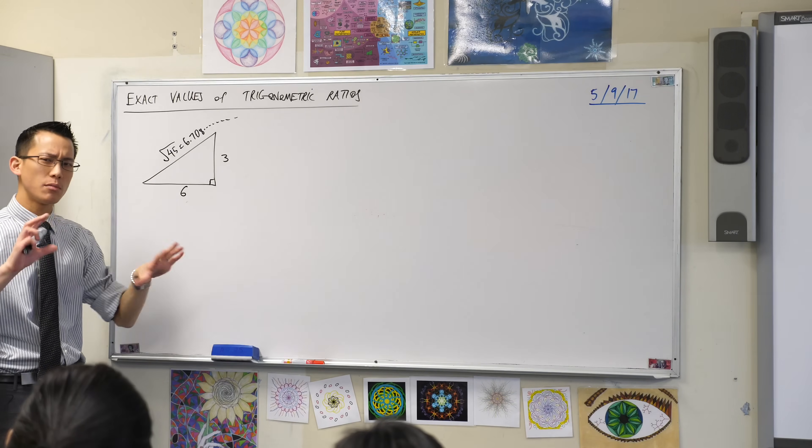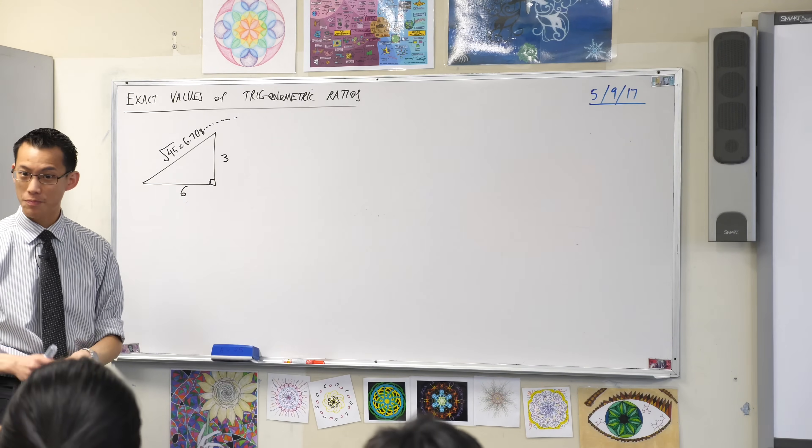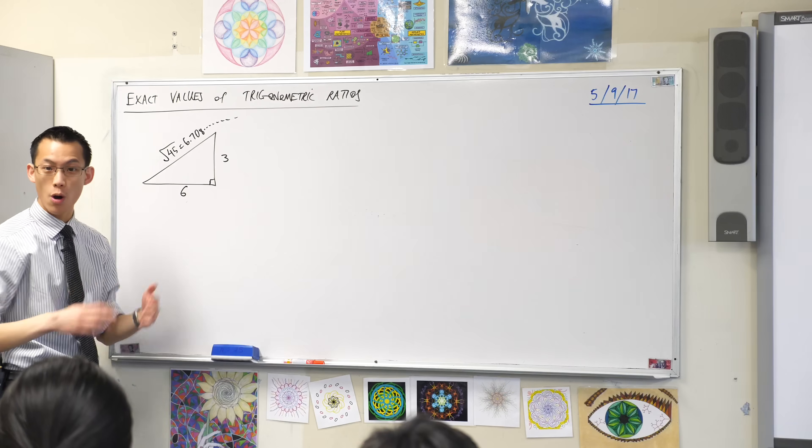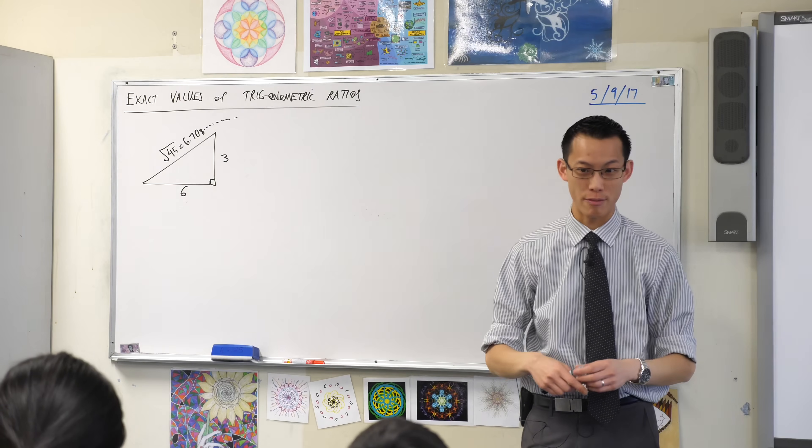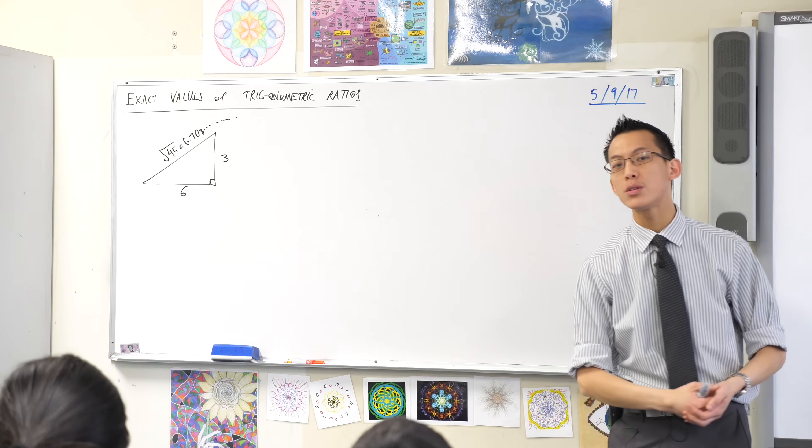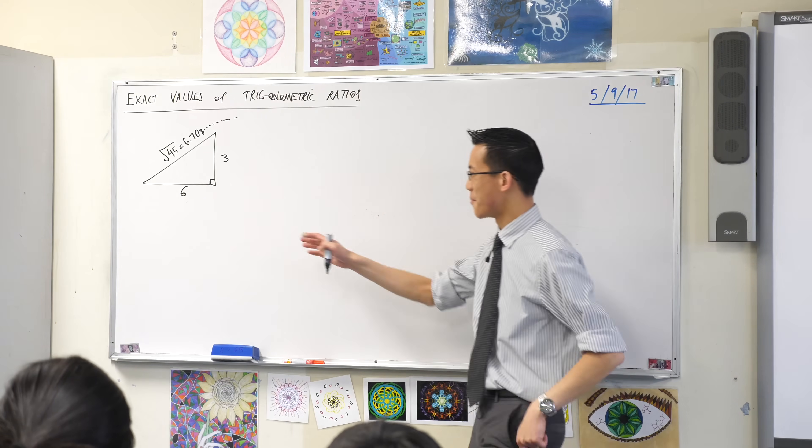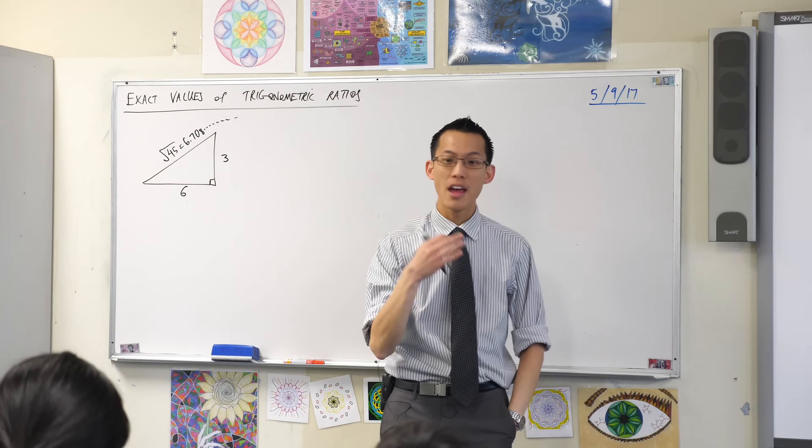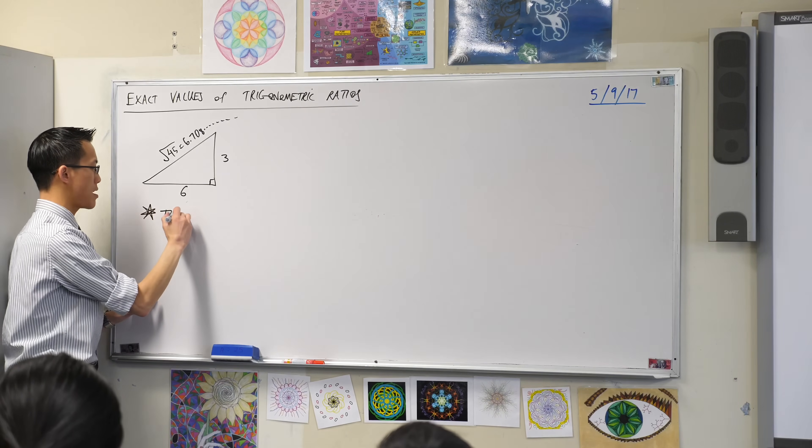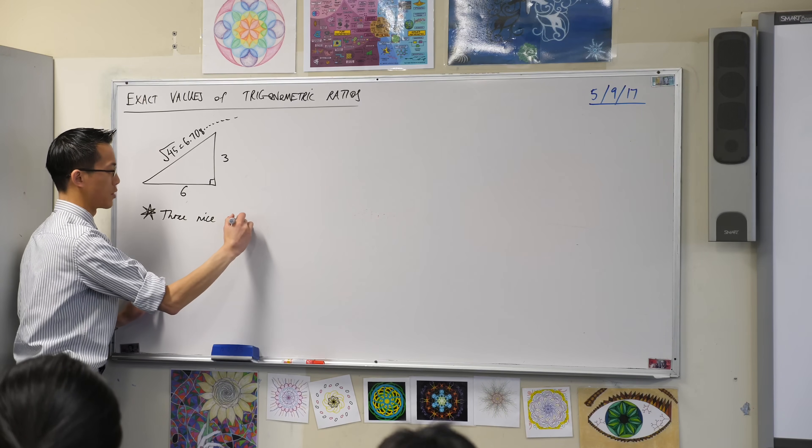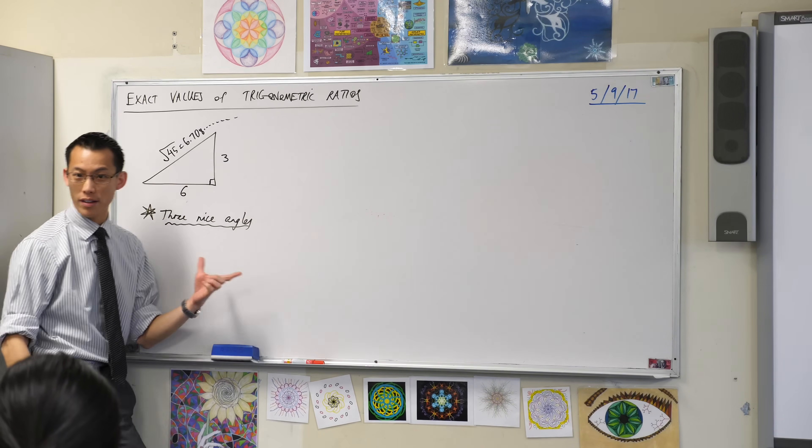Now, in trig ratios, you've got a similar kind of thing, except it's not sides, it's angles. There are certain angles that pop up in right-angled triangles over and over again, and they give you nice numbers for your trig ratios, for sine, cos, and tan. So I'm going to tell you what these nice numbers are. Just like with Pythagoras had its three sides, conveniently, there are three angles.